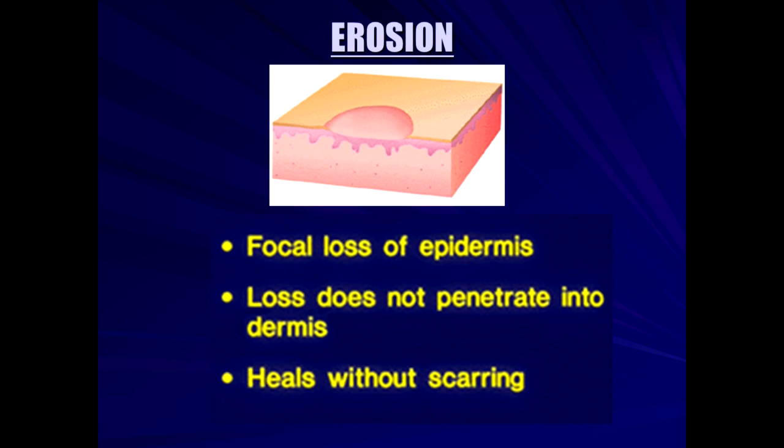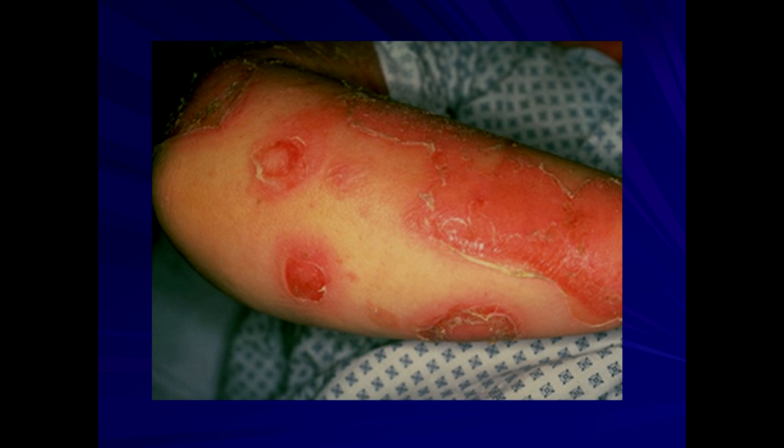Erosion: the skin gets broken down. This typically heals without scarring — focal loss of the epidermis that does not penetrate into the dermis. These eroded areas can be seen in a variety of systemic diseases, including as a result of a systemic drug eruption.